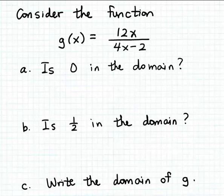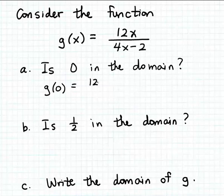Let's first check to see if 0 is in the domain of this function. We're going to use 0 as input to the function, and check to see if the matching output value is meaningful — in other words, if it's a real number. So let's evaluate g of 0 by substituting 0 for the input variable x in the formula that defines the function. We have 12 times 0 in the numerator divided by 4 times 0 minus 2.